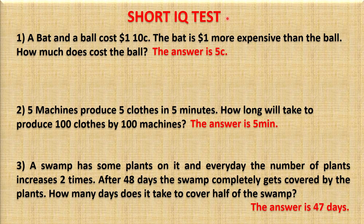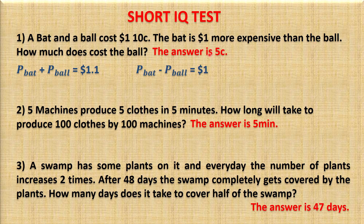We have two terms in this question. The first term is that a bat and a bow cost $1.10, so we can write it as: price of bat plus price of bow equals $1.10. The second term is that the bat is $1 more expensive than the bow, so we can write it as: price of bat minus price of bow equals $1.